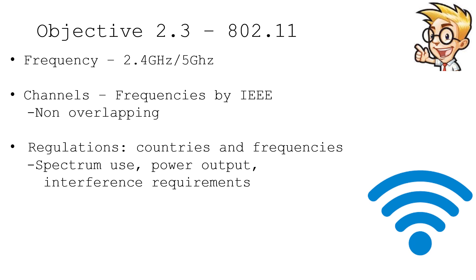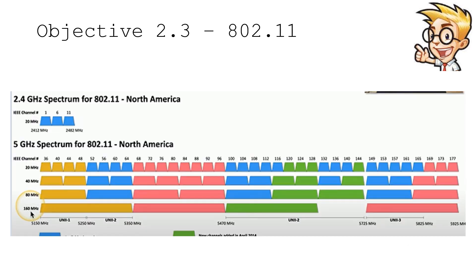We often see 2.4 gigahertz and 5 gigahertz networks compared with 802.11. It's nice to see a visual representation of why 5 gigahertz networks are so popular. These are the only channels available in 2.4 gigahertz — as you can see, there are only three to choose from. If you're in an apartment complex with many 802.11 wireless networks, you'll easily find a lot of activity on all three of those channels because of this limitation.